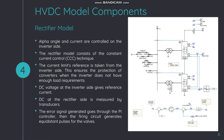The first component is the rectifier model. The rectifier model consists of the constant current control technique, CCC. The current limits reference is taken from the inverter side, which ensures protection of converters when the inverter does not have enough load. The DC voltage at the inverter side gives the reference current and the DC at the rectifier side is measured by transducers. The error signal is generated and goes through a PI controller, and then a firing circuit generates equidistant pulses for the valves, as shown in the figure on the right.